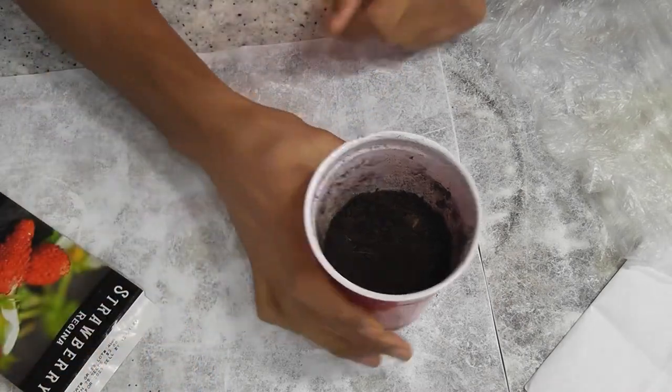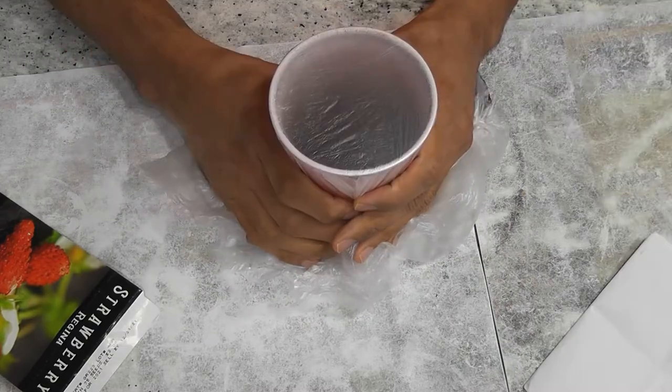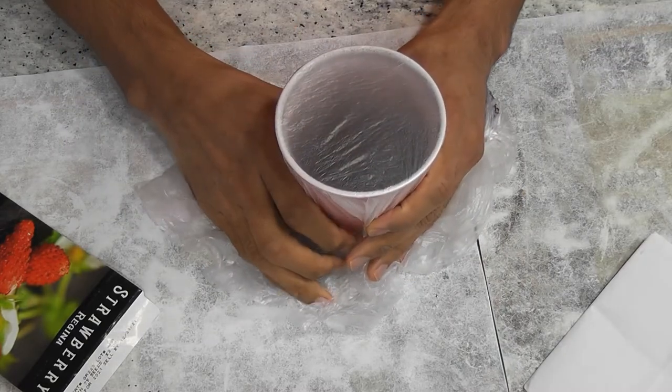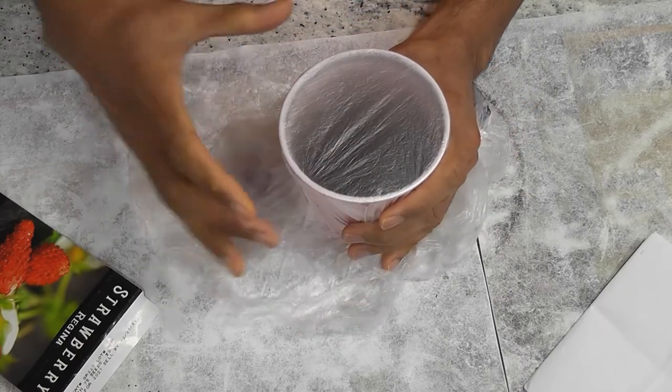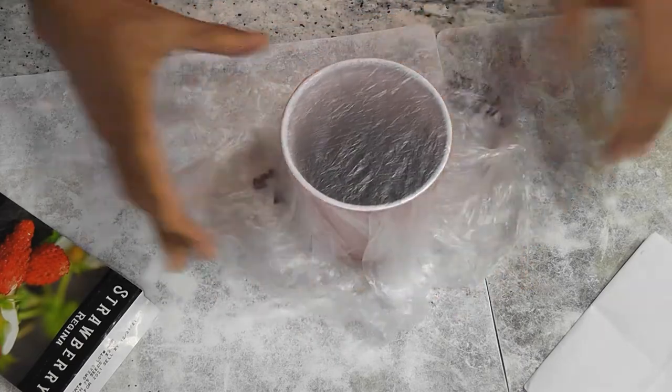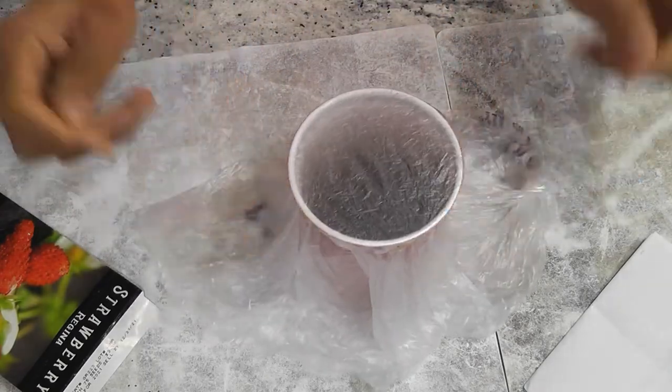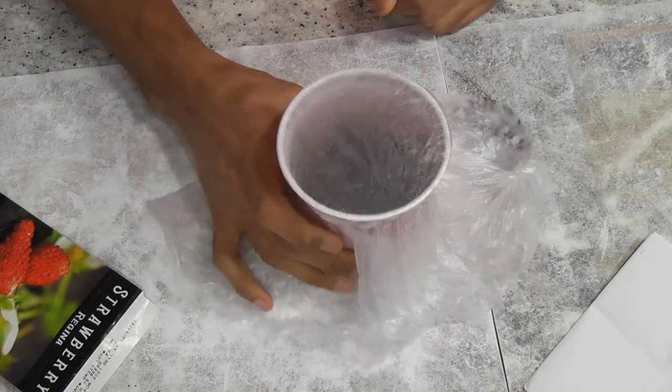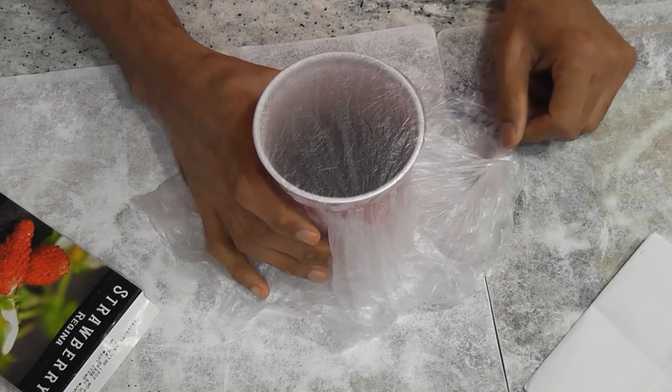Once you drop the seeds, spray some water to retain enough moisture. Then take any transparent wrap such as a plastic cover, Ziploc cover, or a food wrap. Just make sure the light goes through it. Wrap it from the top and tie with a rubber band. Then leave it under some light. I generally place it next to an Aerogarden so that some light comes into this cup and helps seedlings to grow better.